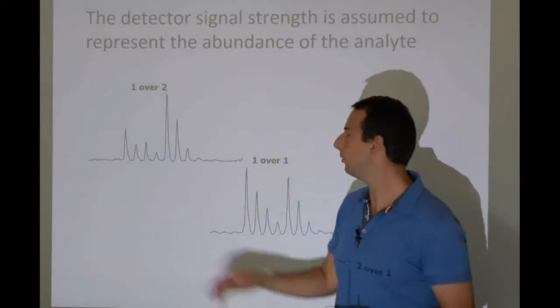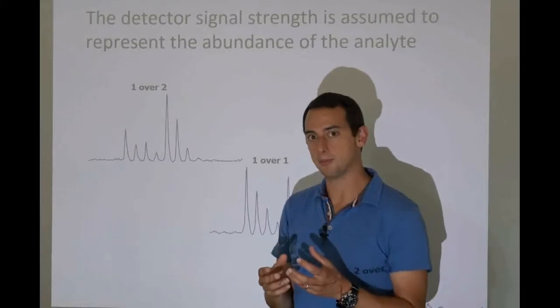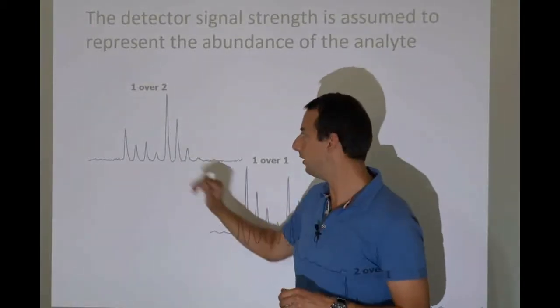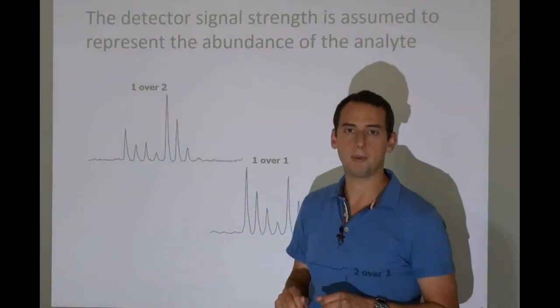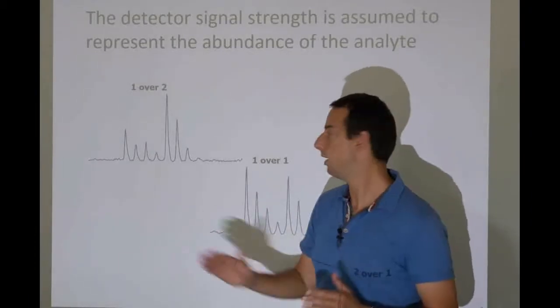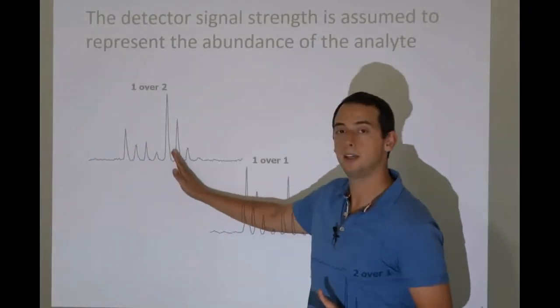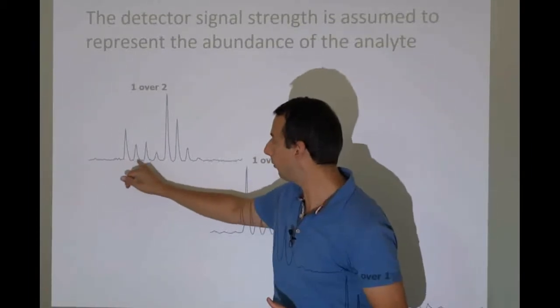we can actually do that by the way, we can add neutrons to some of the atoms that we use in the synthetic versions of a peptide, which makes them heavier. So they move on the M over Z axis. In fact, it moved here by one, two, three,